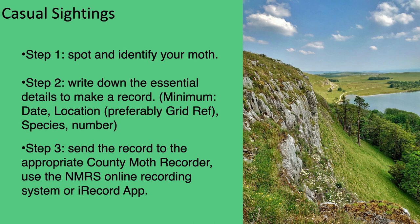For casual sightings of any larger macro moths like the ones we've been learning about today — whether you're moth trapping, relaxing in your garden, or walking on a mountaintop — they can be recorded and submitted to form part of the National Moth Recording Scheme. It involves three simple steps: step one, spot and identify your moth; step two, write down the essential details — a date, location (preferably a good grid reference), the species, and the number you've seen; step three, send the record to the appropriate county moth recorder, use the National Moth Recording Scheme online form, or use the iRecord app.